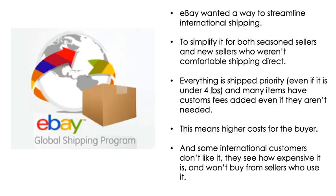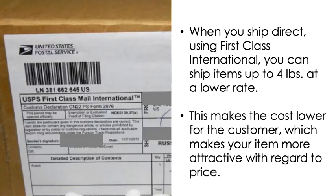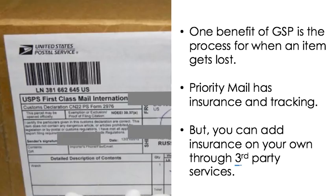When you ship directly — international direct, not using global shipping — you can ship first class international and ship items up to four pounds at a lower rate. That makes the cost much lower for the customer and makes you a more competitive seller. Your items become more attractive to buyers in other countries because your shipping is lower, and that's the main focus of learning to ship yourself.